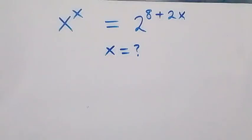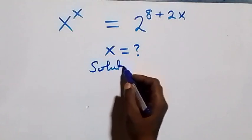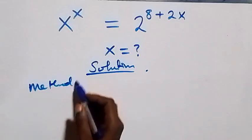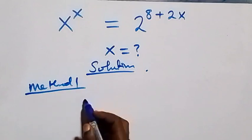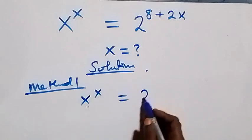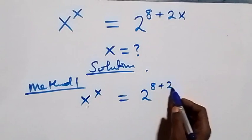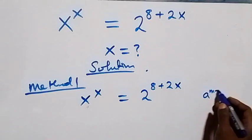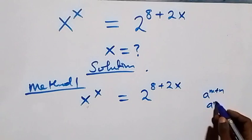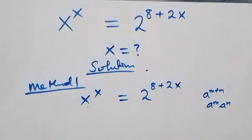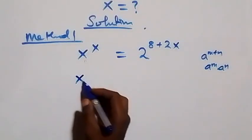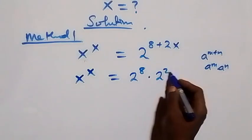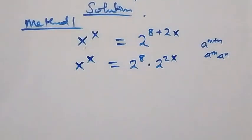Hello, you are welcome. How to solve this nice exponential equation — let's use two methods. The first method: from what we have here, x raised to power x equals 2 raised to power 8 plus 2x. We apply the law of indices: a raised to power m plus n equals a raised to power m times a raised to power n. So this becomes x raised to power x equals 2 raised to power 8 times 2 raised to power 2x.